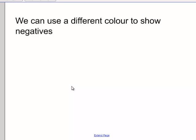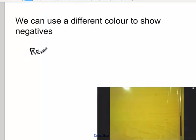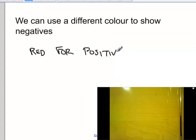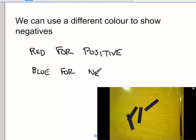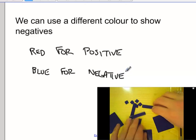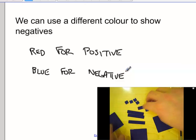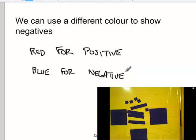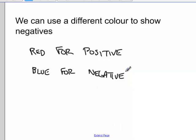We can use a different color tile to represent negative values. We use, traditionally, red for positive tiles. We can use blue for negative. Easy way to remember this is red is hot, blue is cold. On a thermometer, hot usually is in the positive end and cold is in the negative end. So we'll use red tiles to represent positives and blue tiles to represent negatives.